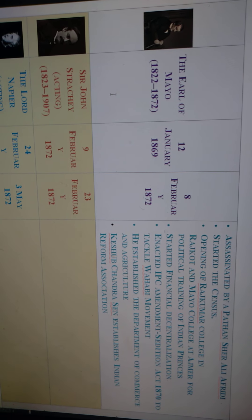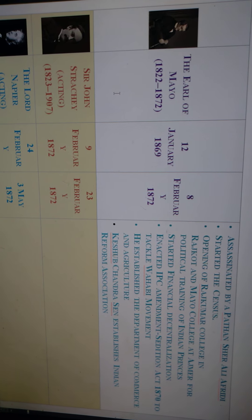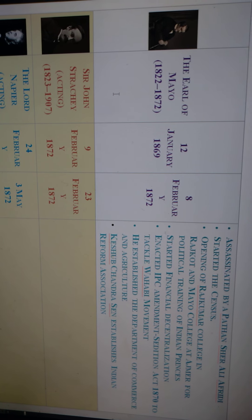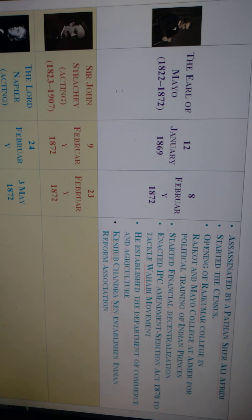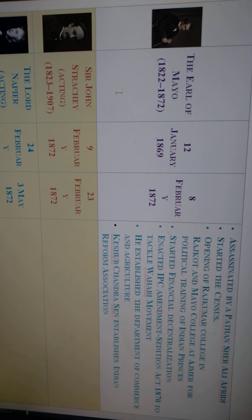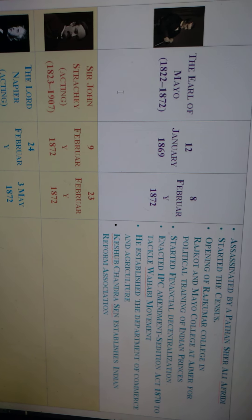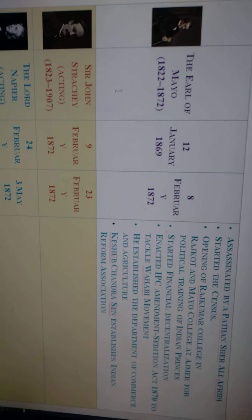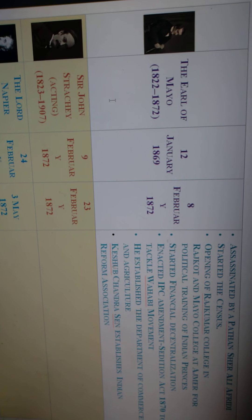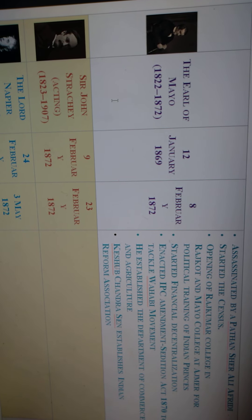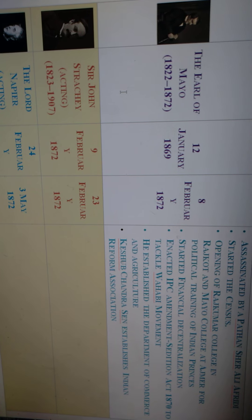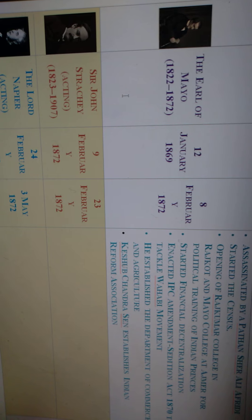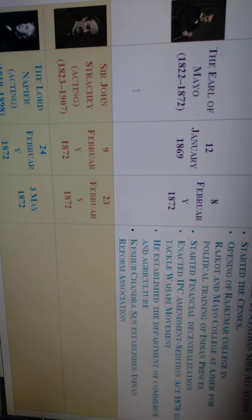Lord Mayo died in 1872. His reforms included starting the census program to count the population, opening Rajkumar Colleges in Rajkot and Ajmer for the political training of Indian princes, initiating financial decentralization, and enacting the IPC Amendment Sedition Act of 1870 to suppress the Wahabi movement. He also established the Department of Commerce and Agriculture.